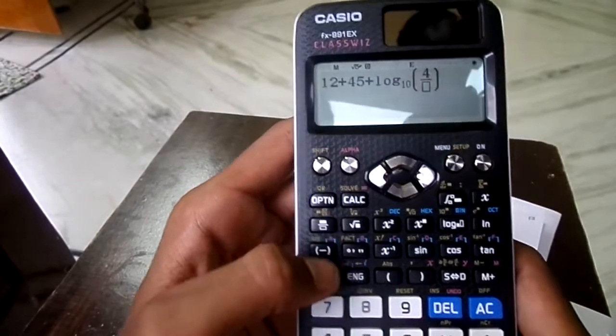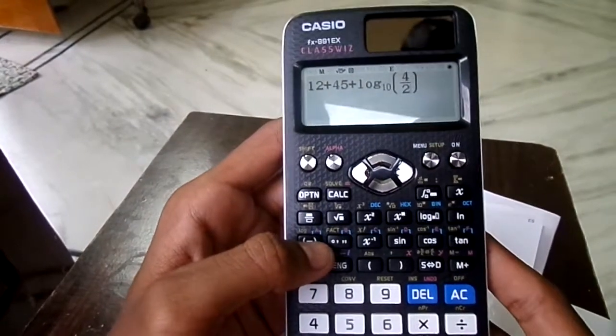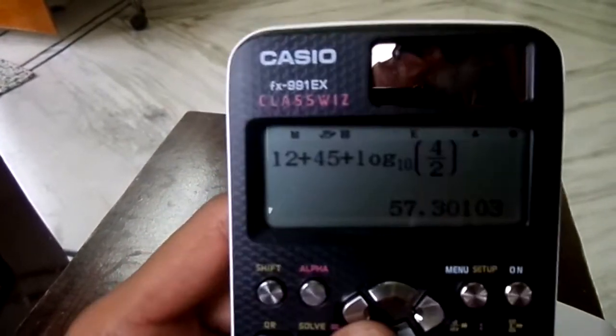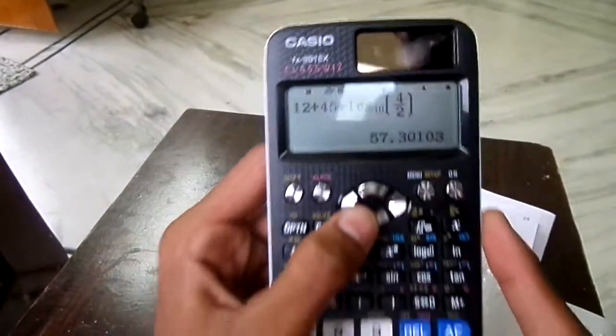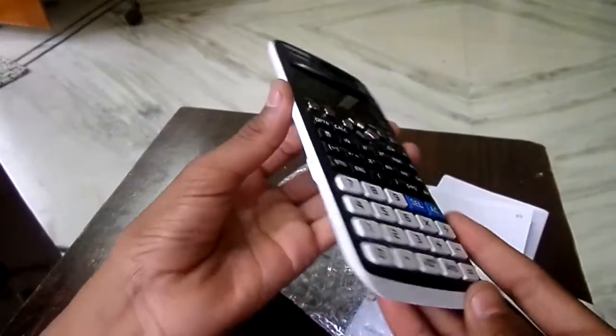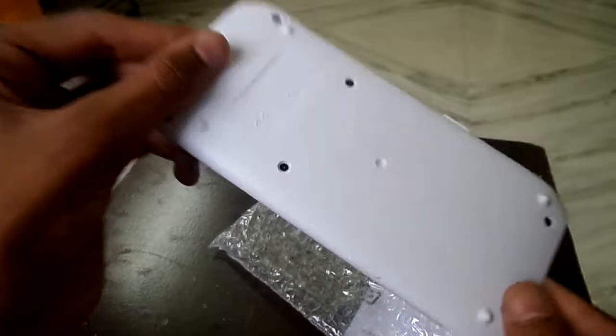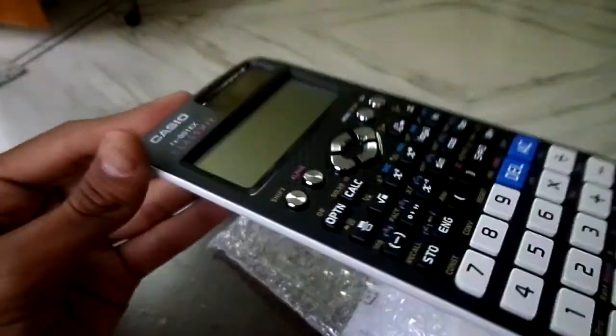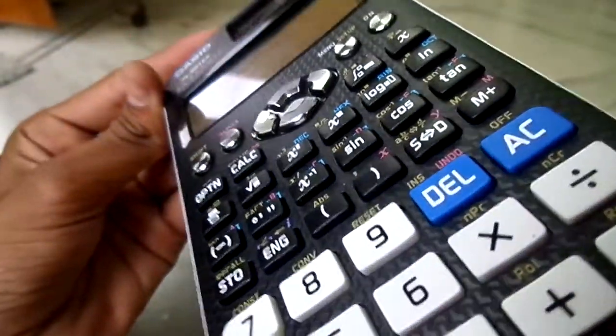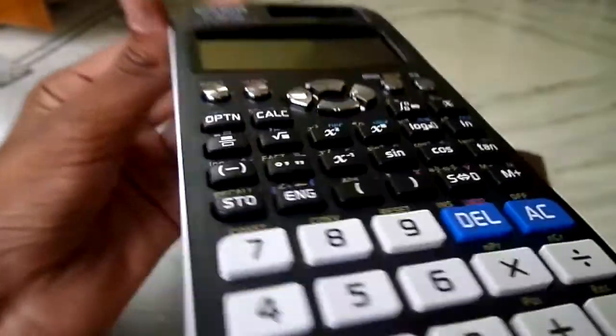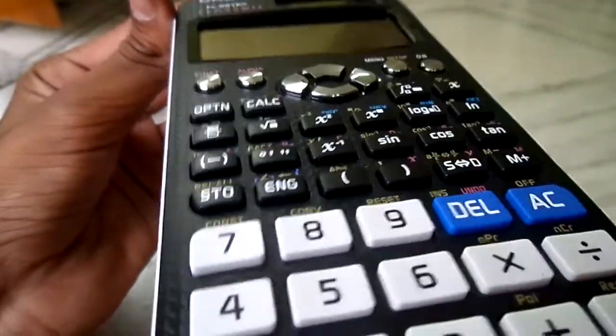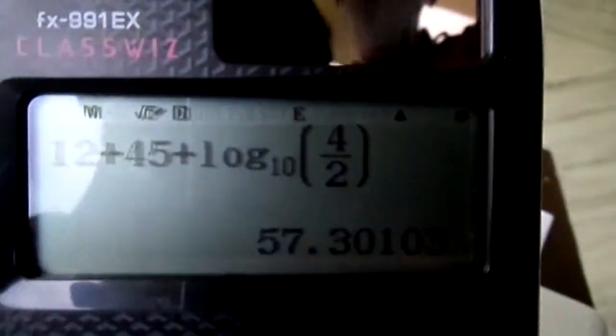And the best thing in this calculator is one, the QR code, and the other is large solar panel. And the final and the best thing for this is the style and the display resolution. The display resolution of it makes it to use in a good way and the style of this product makes us unique in the class.